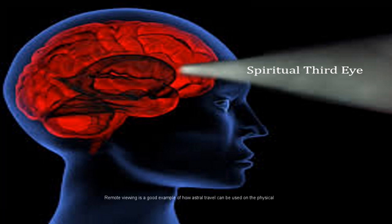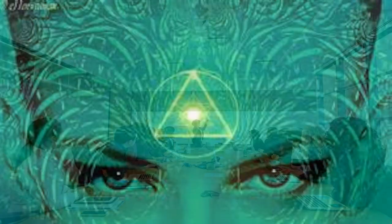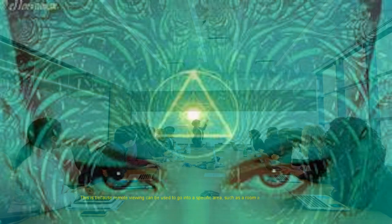Remote viewing is a good example of how astral travel can be used on a physical plane, which has and I am sure still is being used by certain organizations. This is because remote viewing can be used to go into a specific area, such as a room anywhere on the planet, to gain insight or information of what is taking place there, which depends on how powerful the psychic person is.